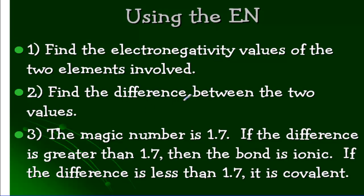You're going to find the difference by subtracting between the two numbers. The magic number is 1.7. If the difference is greater than 1.7, then the bond is ionic. If the difference is less than 1.7, it is covalent.